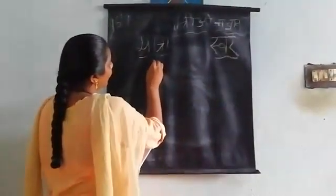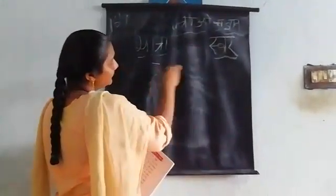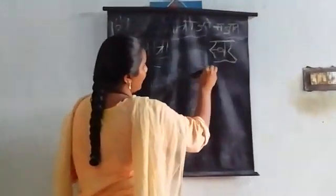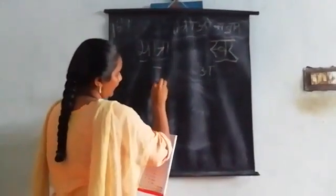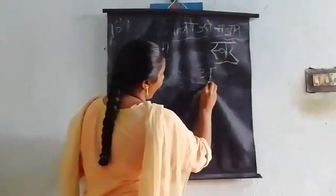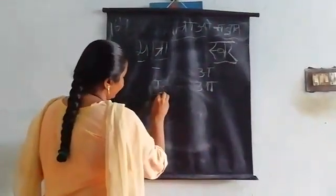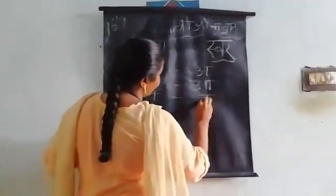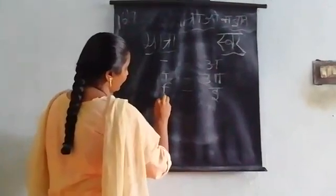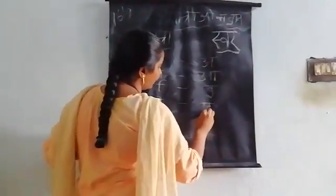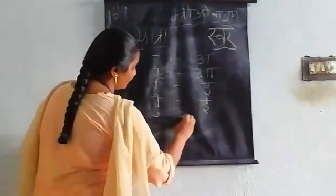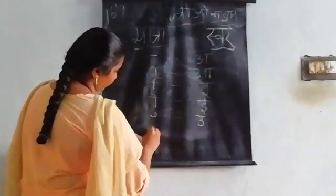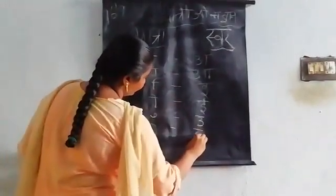This is the matra of A — A ki matra. And this is the matra of A. And this is the matra of E. And this is the matra of E. And this one is U. And this one is Voo.